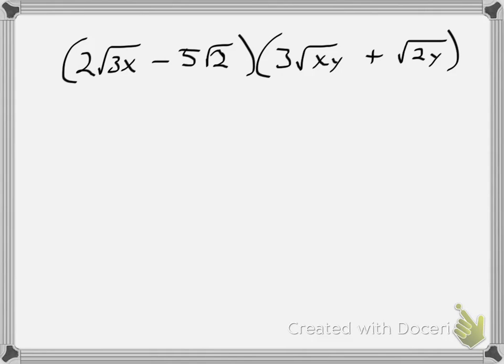Hello everyone. In this video I want to look at multiplying radicals, in this case using the FOIL method. FOIL refers to first, outer, inner, and last. When we multiply radicals, as long as they have the same index, we can multiply radicals. So these are all square roots, so they have the same index.